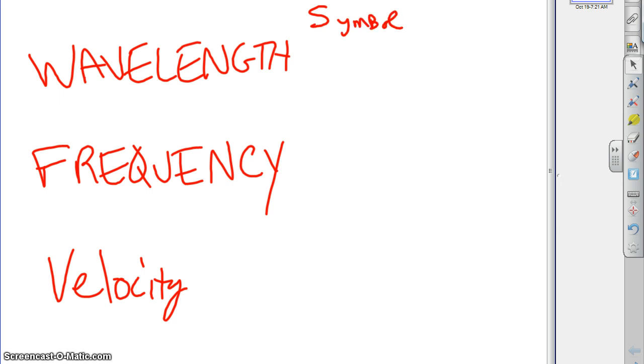But these things all have symbols, and they have units. Now, we already talked about the units. Wavelength is a measure of how far it goes, so we measure it in meters.